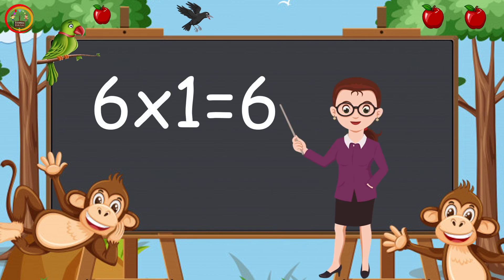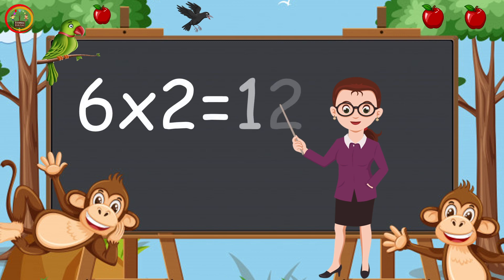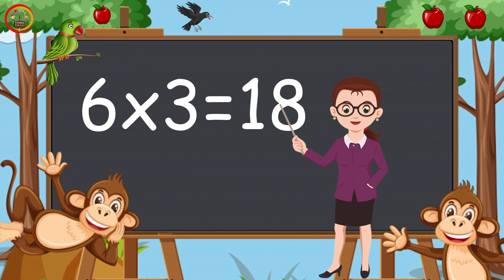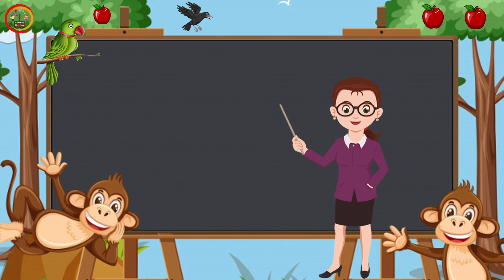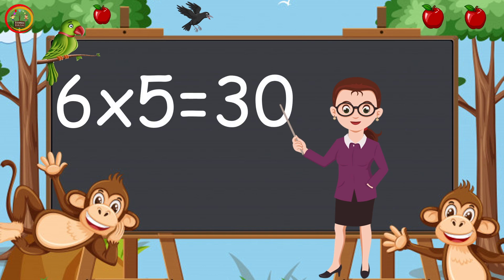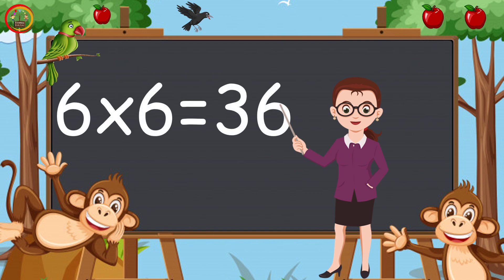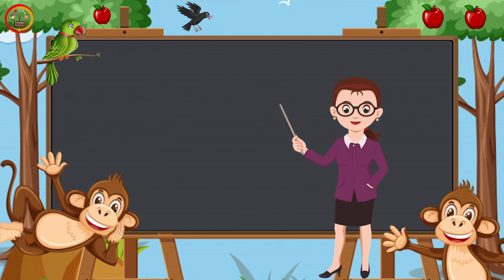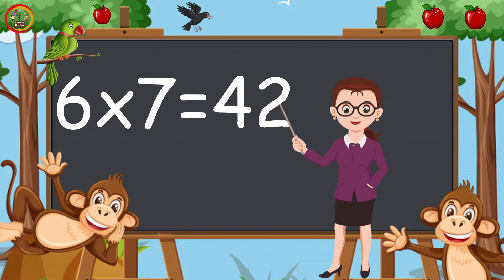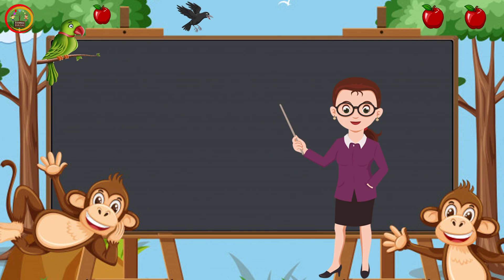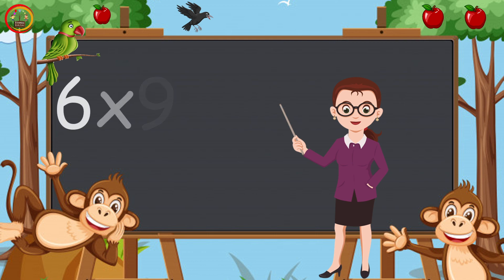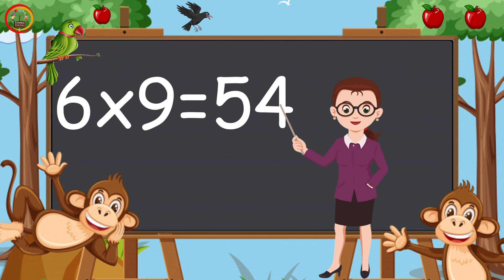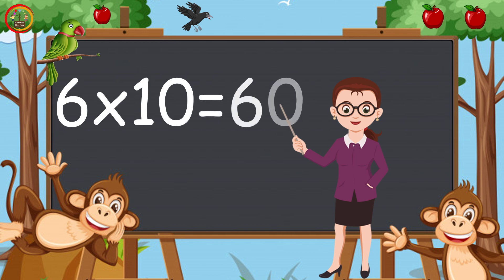6 ones are 6, 6 twos are 12, 6 threes are 18, 6 fours are 24, 6 fives are 30, 6 sixes are 36, 6 sevens are 42, 6 eights are 48, 6 nines are 54, 6 tens are 60.